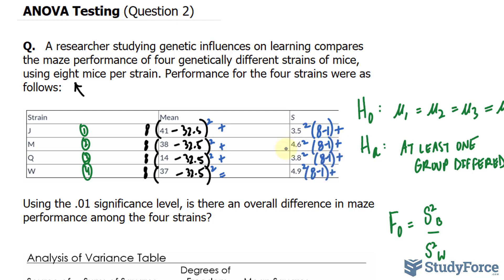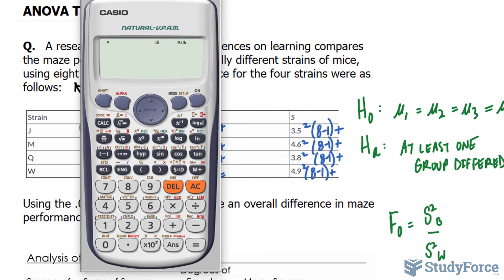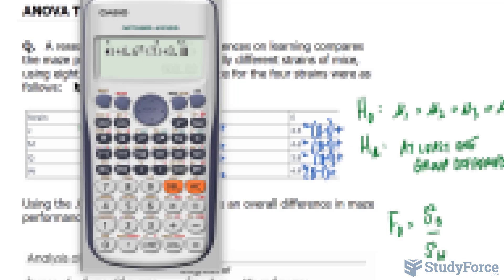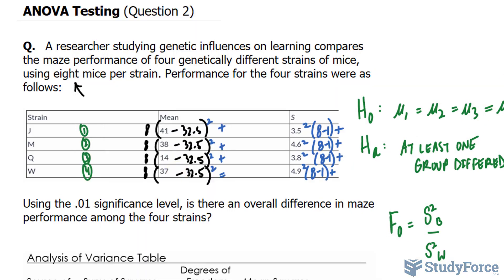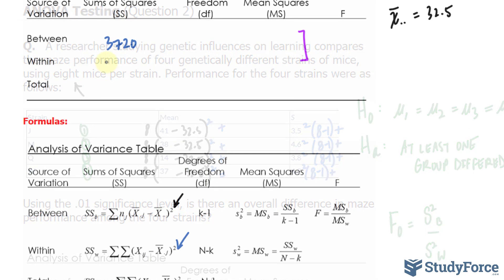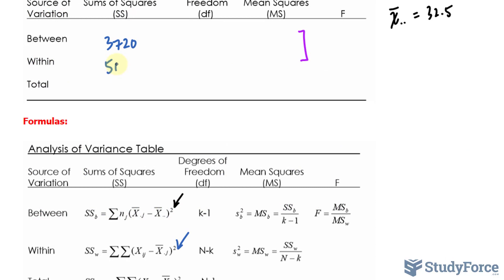So technically, you're taking 3.5 raised to the power of 2 times 7 plus each of these. Let me show you how to put that into your calculator. 3.5 raised to the power of 2 times 7 plus 4.6 raised to the power of 2 times 7, and the rest should give you the following answer. I end up with 503.02, 503.02.